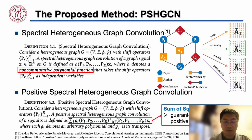To address this issue, we first define the spectral heterogeneous graph convolution as the non-commutative polynomial function of shift operators. The shift operators are multiple adjacency or Laplacian matrices derived from the heterogeneous graph. This method has been explored in graph signal processing, but such a naive formulation cannot guarantee the positive semi-definiteness of graph filters.